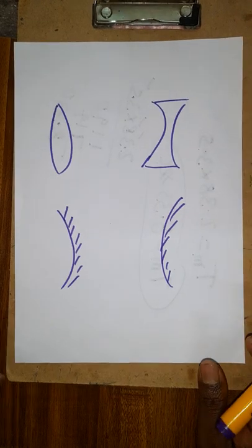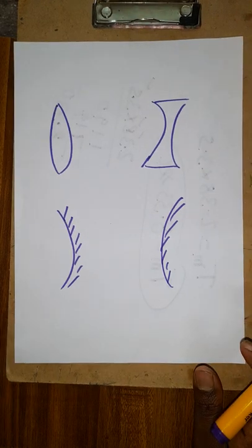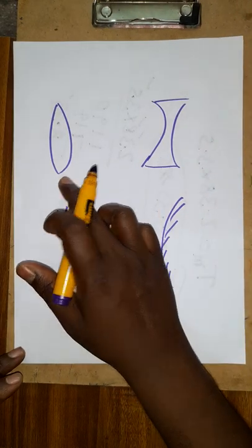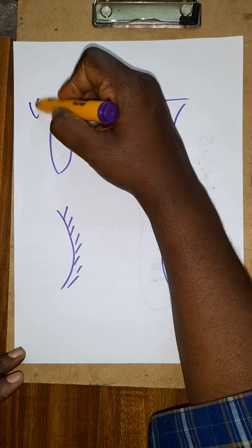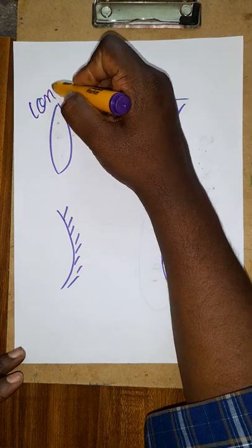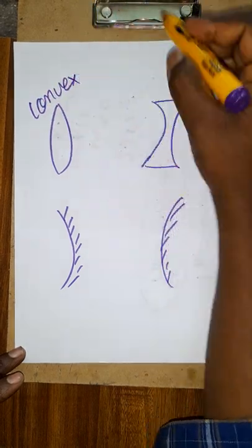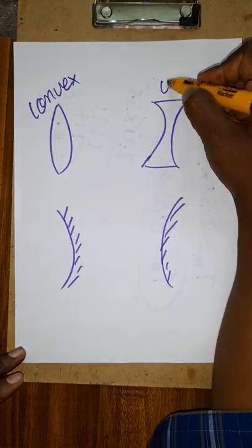Hello! Today we are going to see an optical device. It is a convex lens. We are going to see whether it is a positive or negative lens.